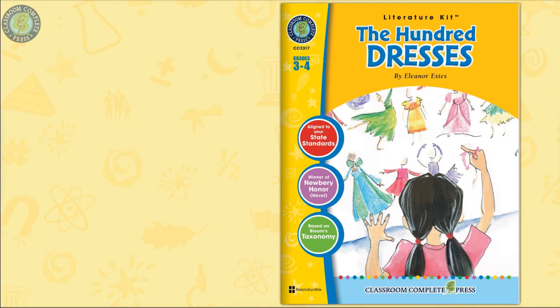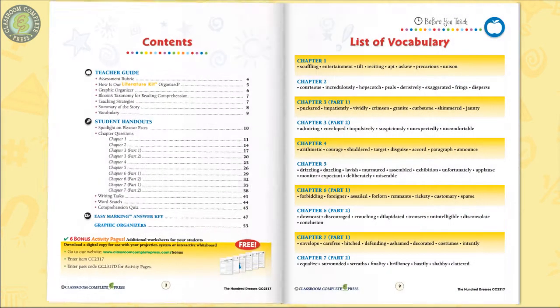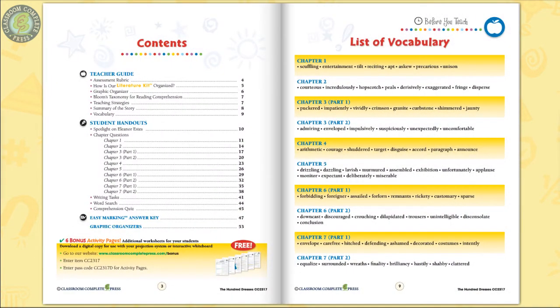This literature kit on The Hundred Dresses by Eleanor Estes brings to light the hardships of bullying, offering a unique viewpoint on the hardships, perseverance, and acceptance experienced by a young girl. It brings to the forefront topics for discussion about treating each other in a kindly manner.